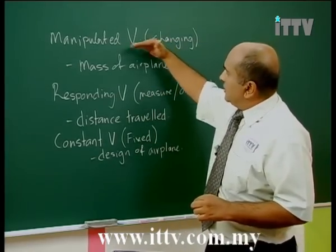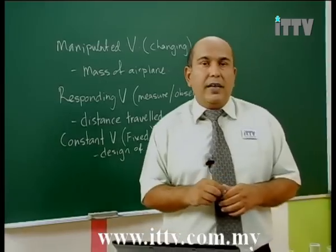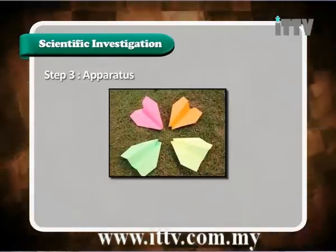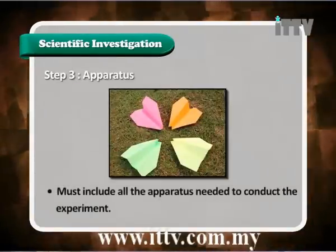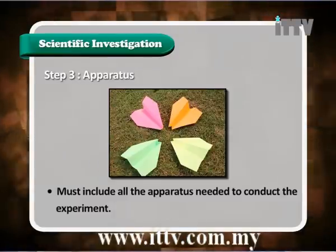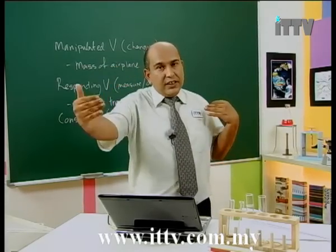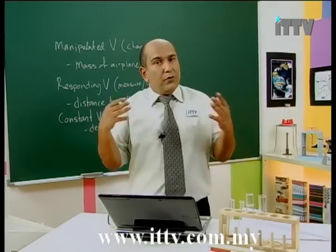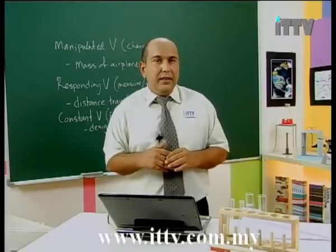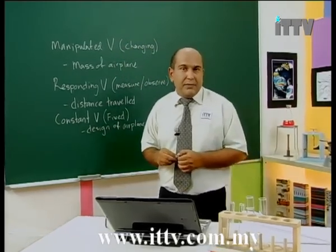So we've got our three variables: the manipulated, the responding, and the constant variable. Now we need to move on and think about what we're going to use to do this experiment. Step 3 — apparatus: must include all the apparatus needed to conduct the experiment. If you're going to take a paper airplane, let it fly, measure the distance, and repeat the experiment using paper clips to add mass, think about all the things that you need.